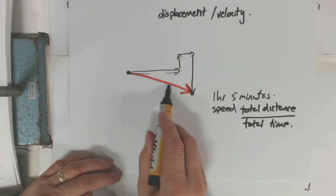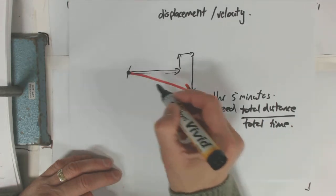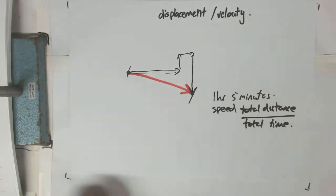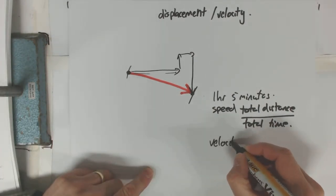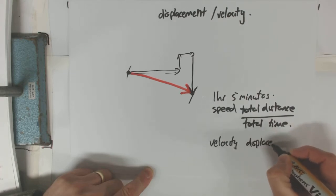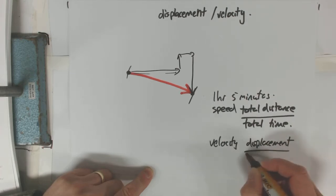And it has a distance, the length, and it has a direction. So your velocity is your displacement divided by total time.